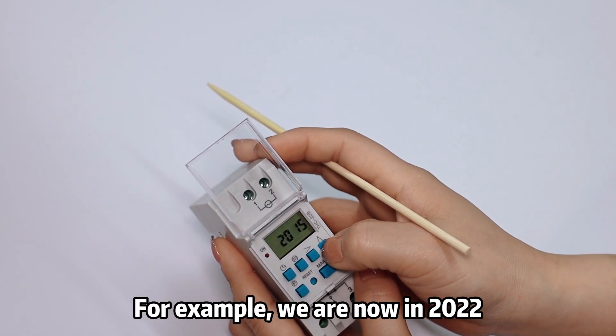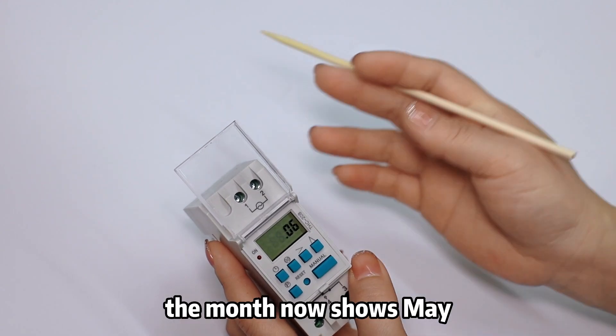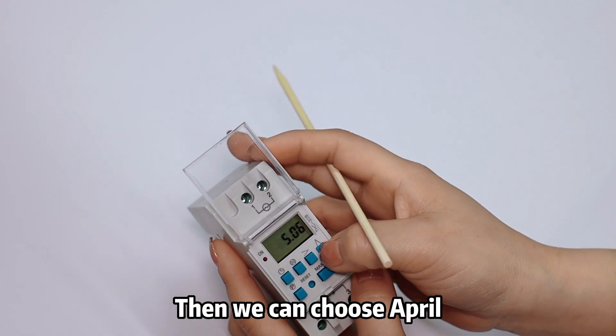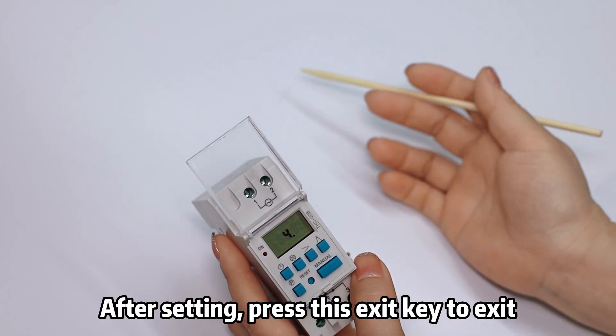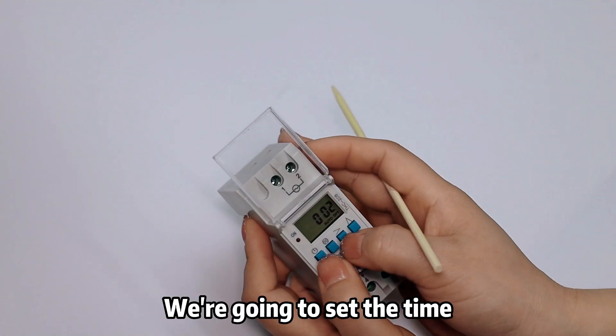For example, we are now in 2022, so set it to 2022. Set the month - it now shows April as our current month, so we choose April. It shows the 6th, but today is the 14th. After setting, press this exit key to exit. We're going to set the time.